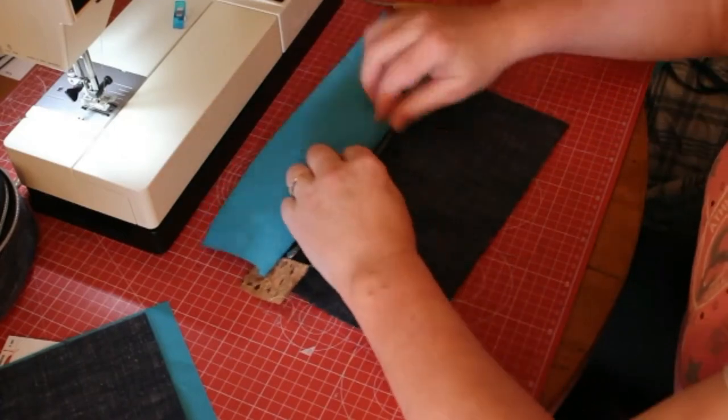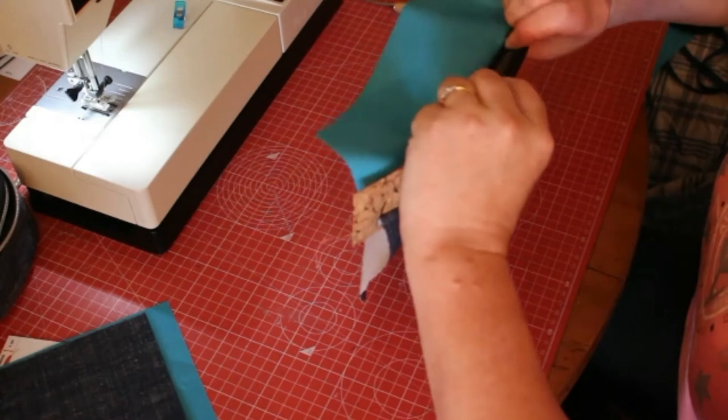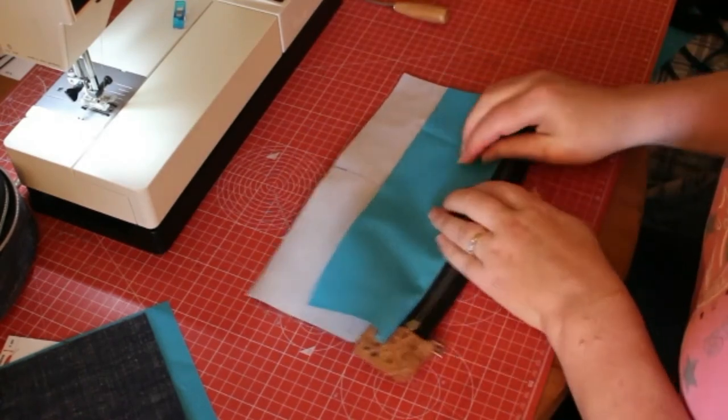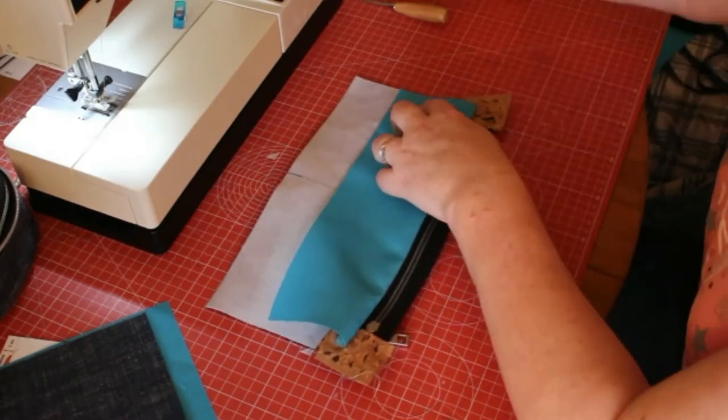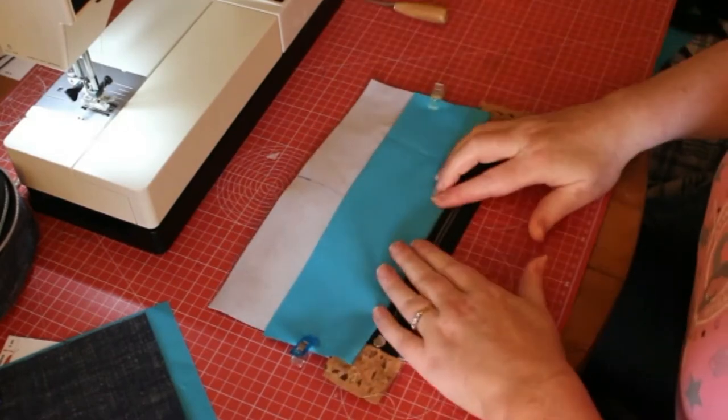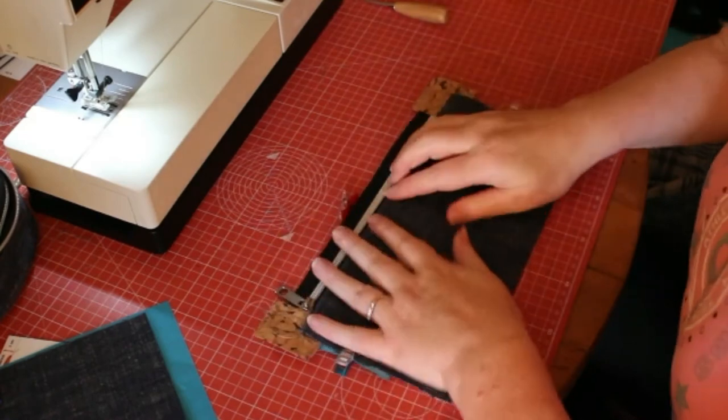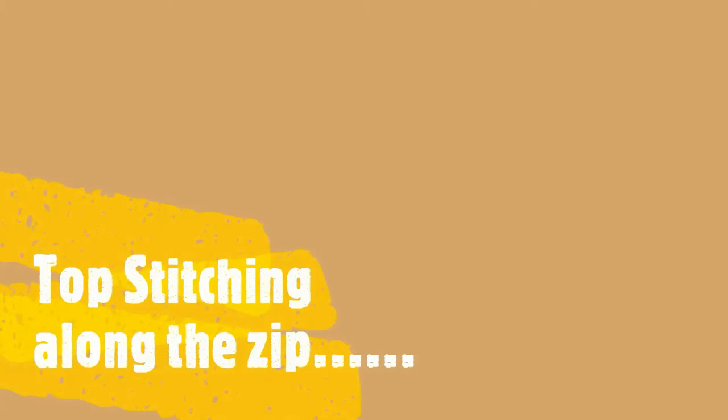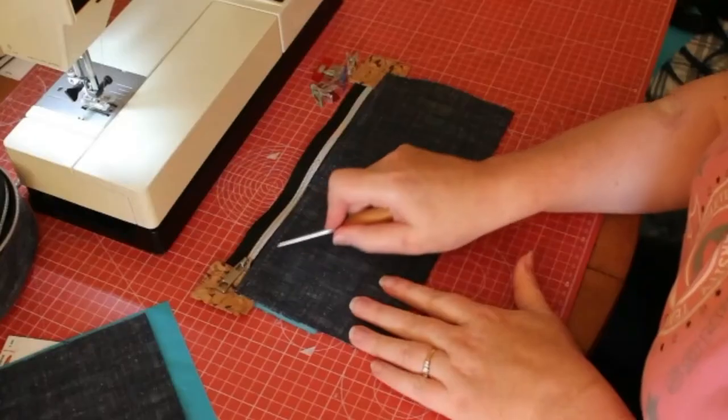I use a short stitch length and stitch it in place. I find the waterproof canvas difficult to manipulate and I don't iron it, so I just clip it on both sides and finger press. Then I'm going to topstitch along the side of the zip.